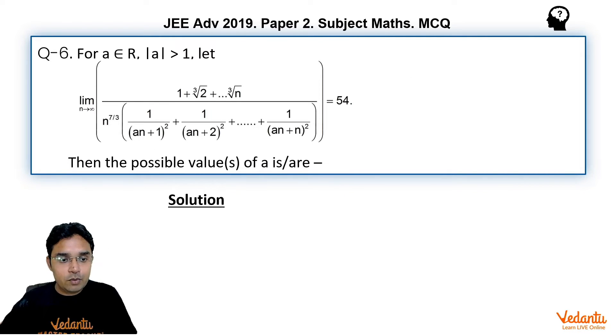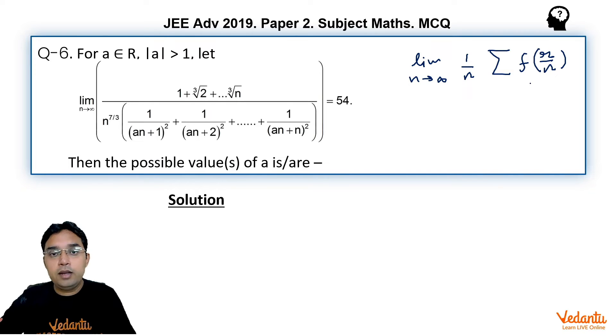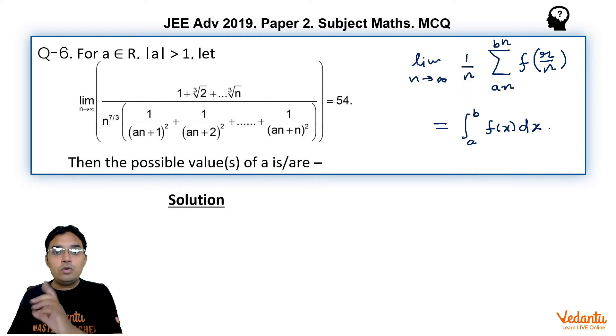Before we solve this question, first let me tell you the underlying concept or formula required to solve this question and it is that limit n approaches to infinity 1 upon n sigma f of r upon n where limit of r is varying from A times n to B times n can be written directly as definite integration A to B f(x) dx.